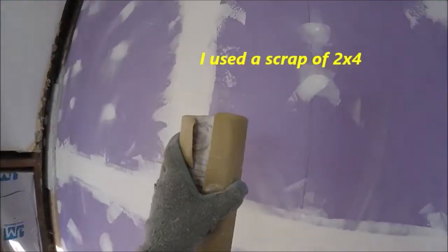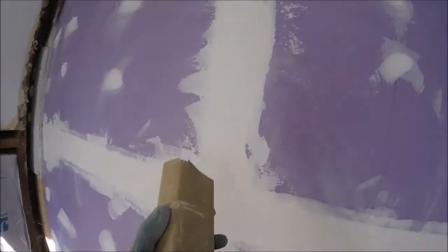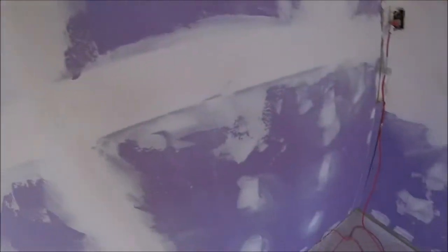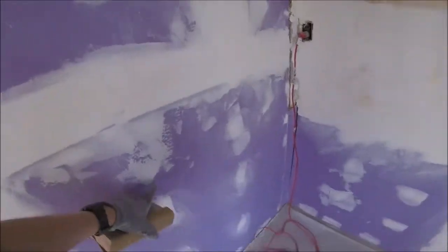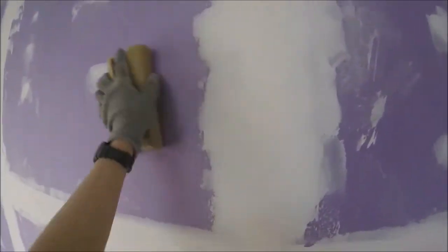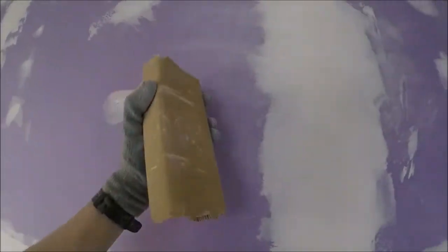So now you're going to want to take a sanding block and you're going to want to use like 120 to 150 grit. We're just going to start sanding over all the seams and the screw holes. You're just going to want to feather these edges, the left and the right of the tape. Then we're going to come back and do our second coat and sand it once more, and that'll be nice and smooth before we texture.